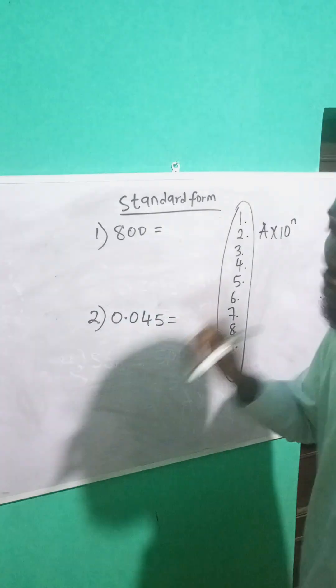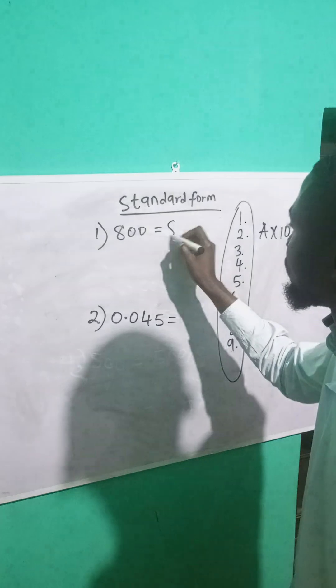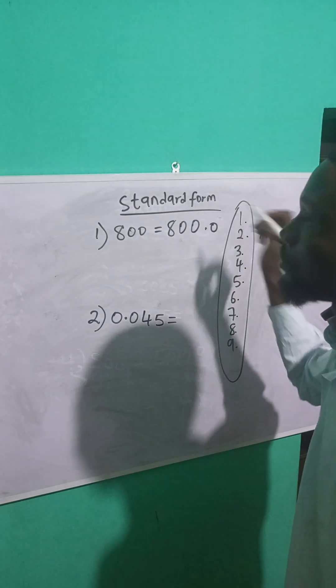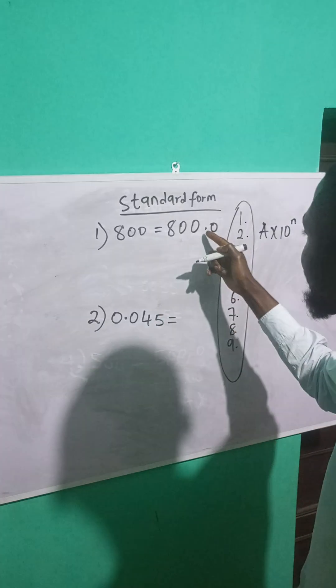Let me demonstrate it using this number. Let's express 800 in standard form. 800 is the same as 800.0, right? Now to express this number in standard form, I'm going to move from this decimal to where I need a whole number.